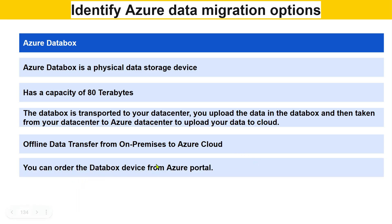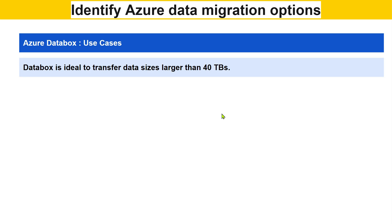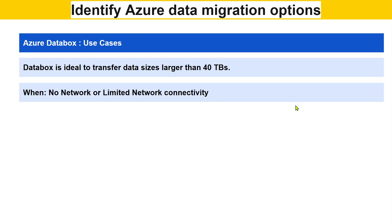You can order the Data Box device directly from the Azure portal. Data Box is ideal to transfer data sizes larger than 40 terabytes. It is best used when you have no network or limited network connectivity — these are the ideal times for using a Data Box, though there are other scenarios as well.